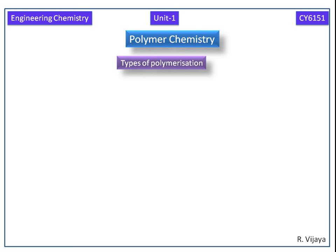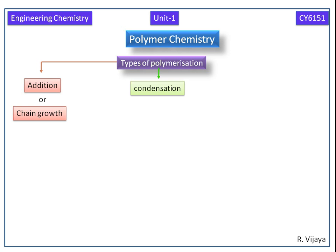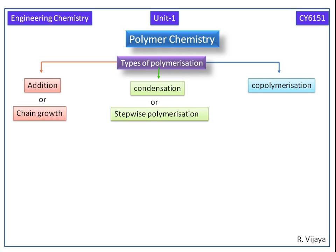Now we discuss types of polymerization. There are three types of polymerization. One is addition or chain growth polymerization. Second one is condensation or stepwise polymerization. Third one is co-polymerization. In this video, we discuss the details of addition polymerization.